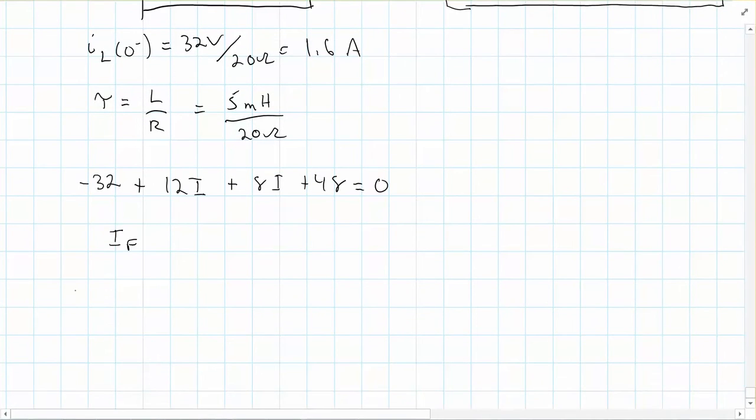And so of course we can get an equation for IL. It's I final plus the initial current minus the final, e to the negative t over tau. And of course I'll let you finish that out here.